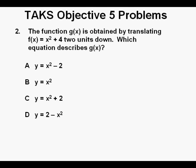Problem 2. The function g of x is obtained by translating f of x equals x squared plus 4 two units down. Which equation describes g of x? If we have a correct understanding of functions we will know that this number all by itself 4 is the y-intercept of the function.